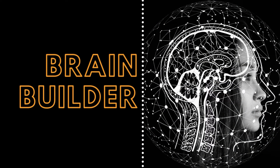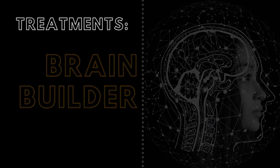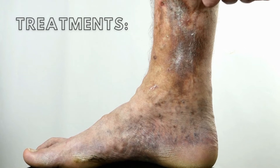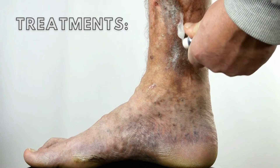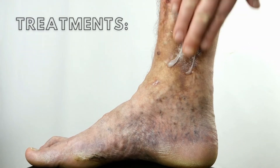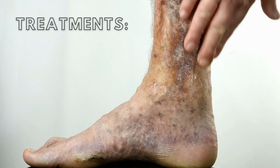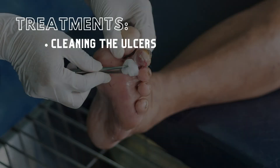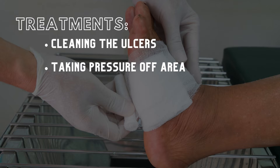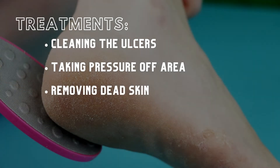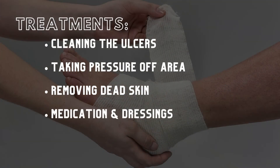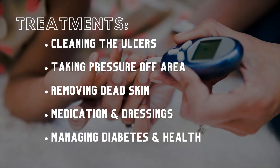Now that we understand how diabetes mellitus can cause foot ulcers and the symptoms of peripheral neuropathy, let's learn about the treatments for diabetic foot ulcers. There is no cure for diabetic neuropathy due to the tissue death. However, there are treatment options to help manage ulcers and minimize pain, which can include cleaning the ulcers to prevent infection, taking pressure off the area with special bandaging to redistribute pressure, removing the dead skin and tissue around the ulcer, applying medication and dressings, and managing one's diabetes and other health problems to prevent worsening or future ulcers.